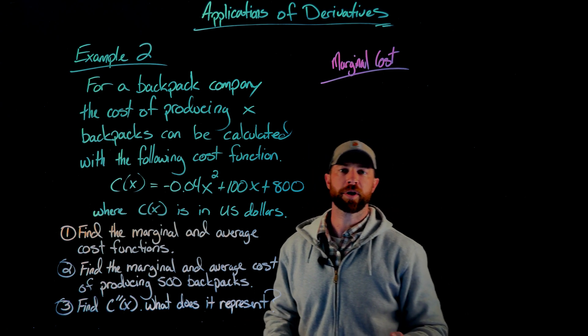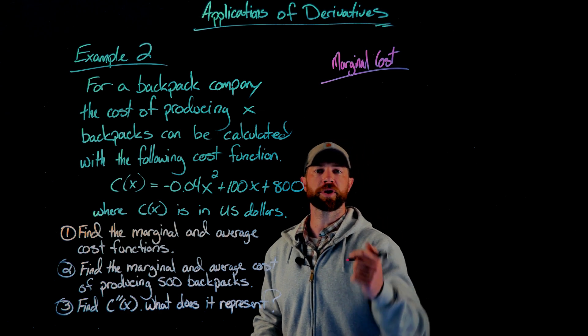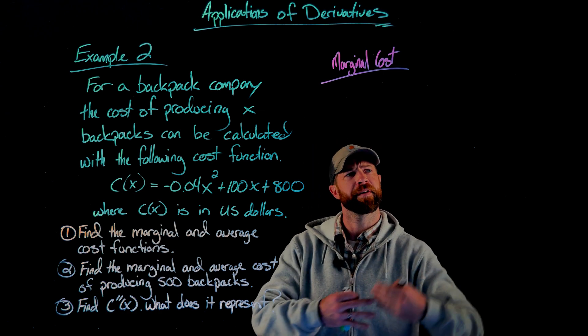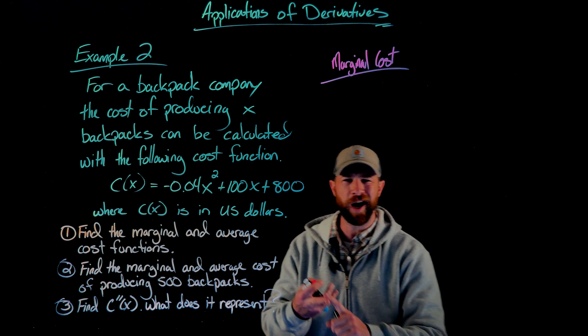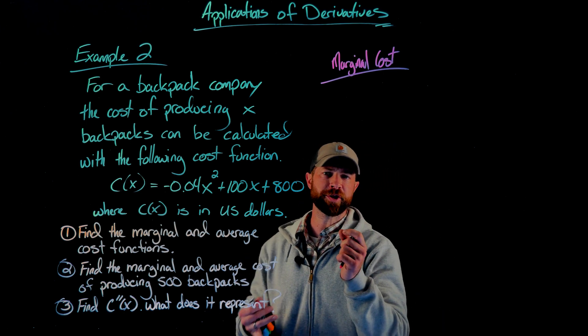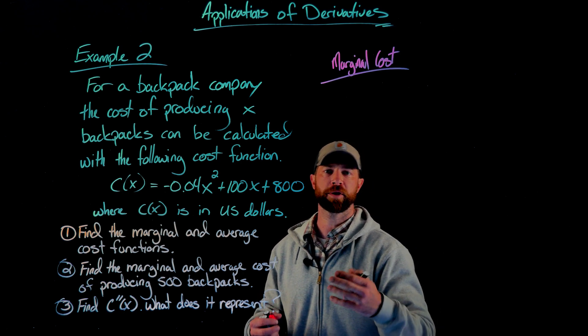First up, the marginal cost function. If we have a cost function, the first derivative is called the marginal cost function. This is very similar with a position function where the first derivative is always the velocity. If we have a cost, revenue, or profit function, the first derivative will always tell us the marginal profit, marginal cost, or marginal revenue.